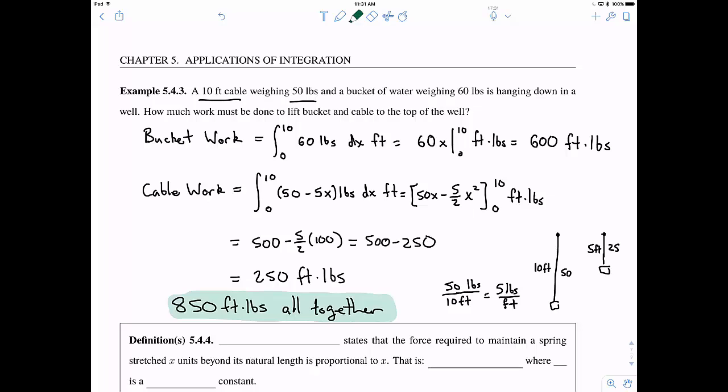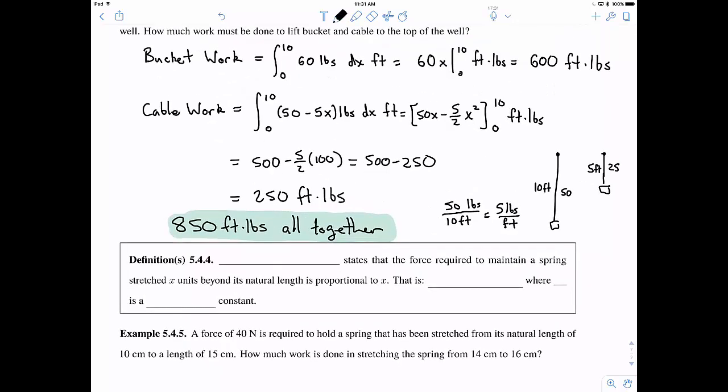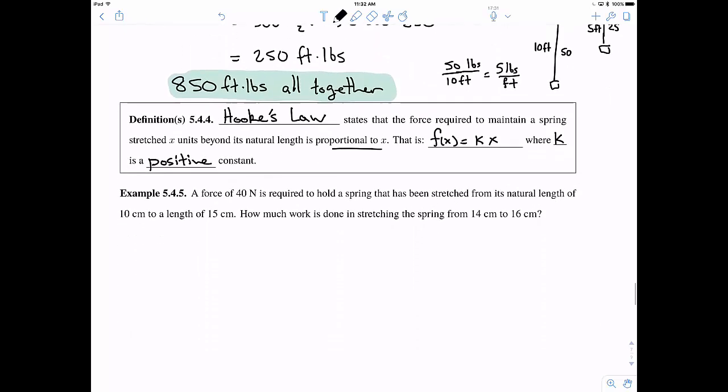Okay, one last thing for this video. I want to talk a little bit about a special case of work, and that's going to be for springs. And for springs, we're going to use Hooke's Law. So Hooke's Law states that the force required to maintain a spring stretched x units beyond its natural length is proportional to x. So that means that the force is equal to some constant k times x. And we call this k usually the constant of proportionality, it's a positive constant.